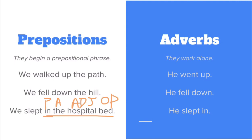Let's go over to the adverb side: he slept in. In this case, 'in' is our adverb. It's working by itself — it is not part of a prepositional phrase. 'In', in the second sentence, is an adverb.